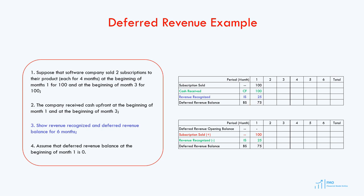In the second month, we did not sell any subscriptions, so subscription sold and cash received are both zero. We still recognize revenue of $25 because we continue spreading the first subscription's $100 over four months. In the auxiliary calculations, the opening balance is $75 — the ending balance from the prior period. Subscription sold is zero, revenue recognized is $25, so the deferred revenue ending balance is $75 plus $0 minus $25, which equals $50. This flows to our main calculations, so deferred revenue is $50 in month 2.